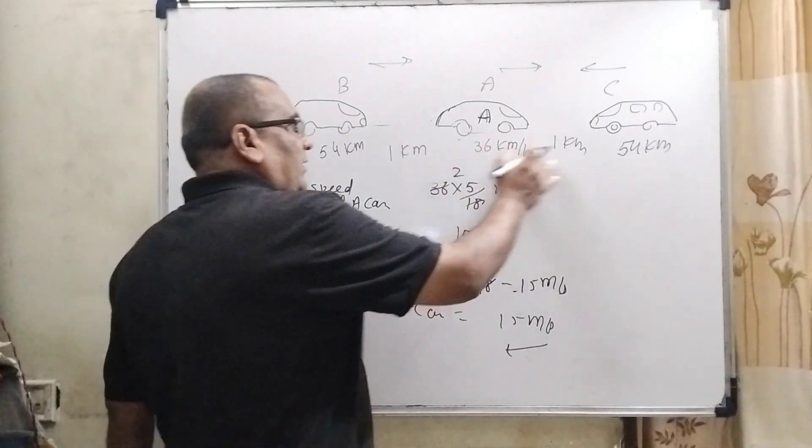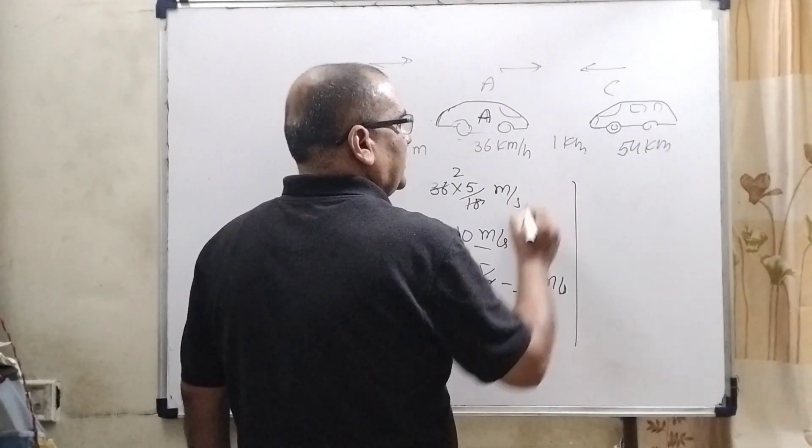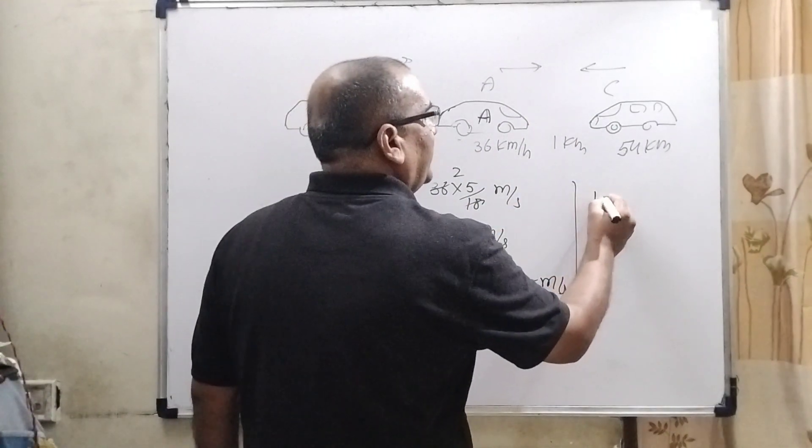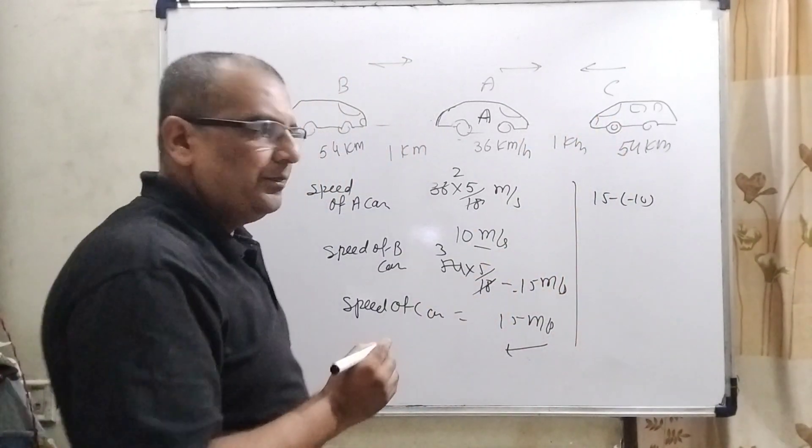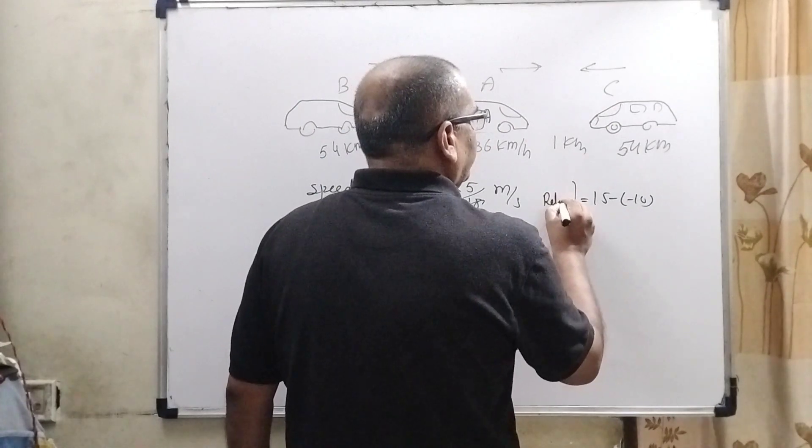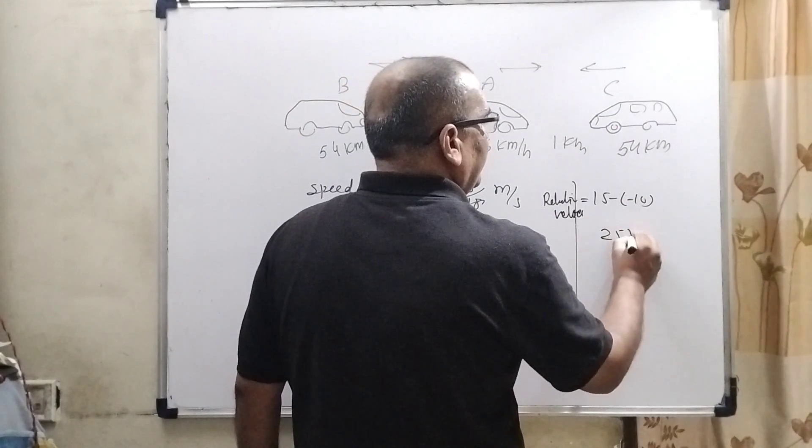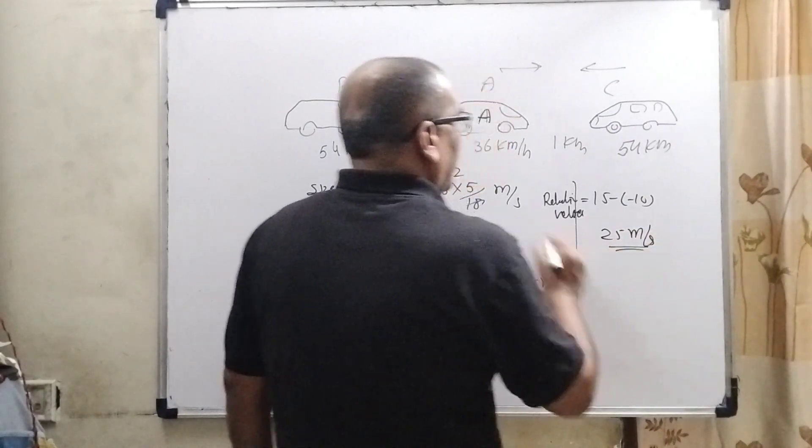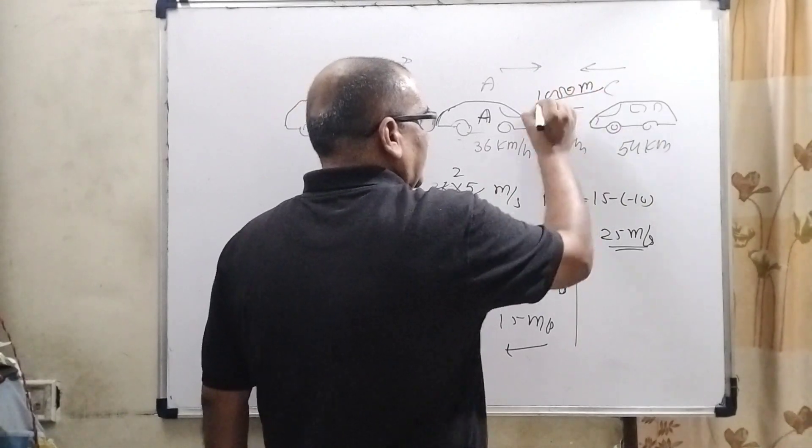So, first of all, we have to find out the relative velocity of C. You know that it is in opposite direction. So, therefore, 15 minus negative 10 because its direction is opposite. So, here the relative velocity of C with respect to A is 25 meter per second and the distance to cover is 1000 meter, converted from kilometer into meter.